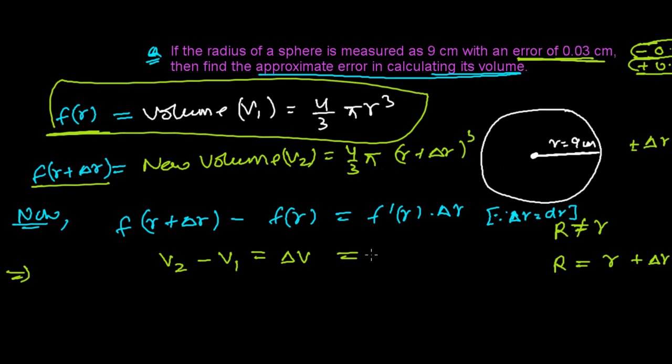The first coefficient stays as it is: 4/3. Pi is also constant, so it will be as it is. Now the derivative of r³ is 3r². Then delta r - the change in radius.